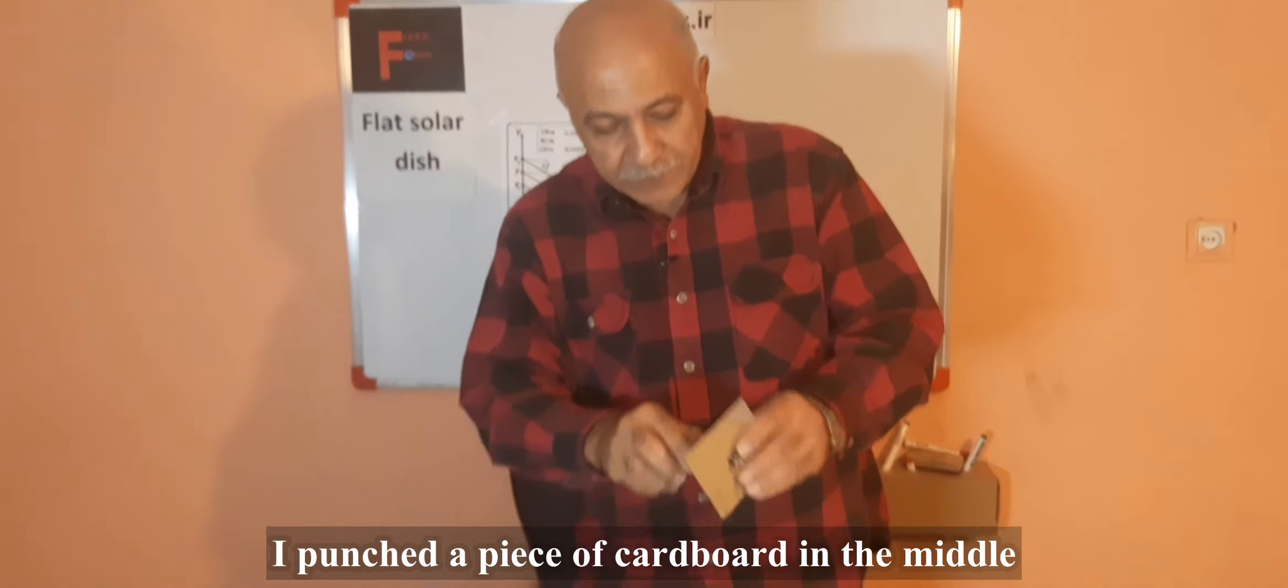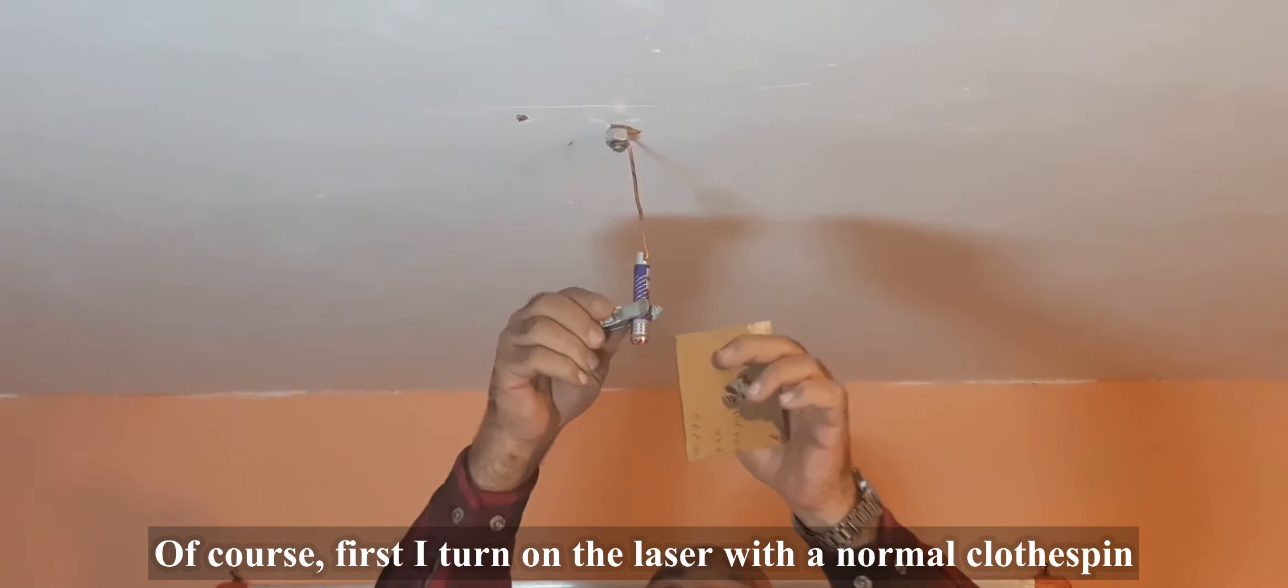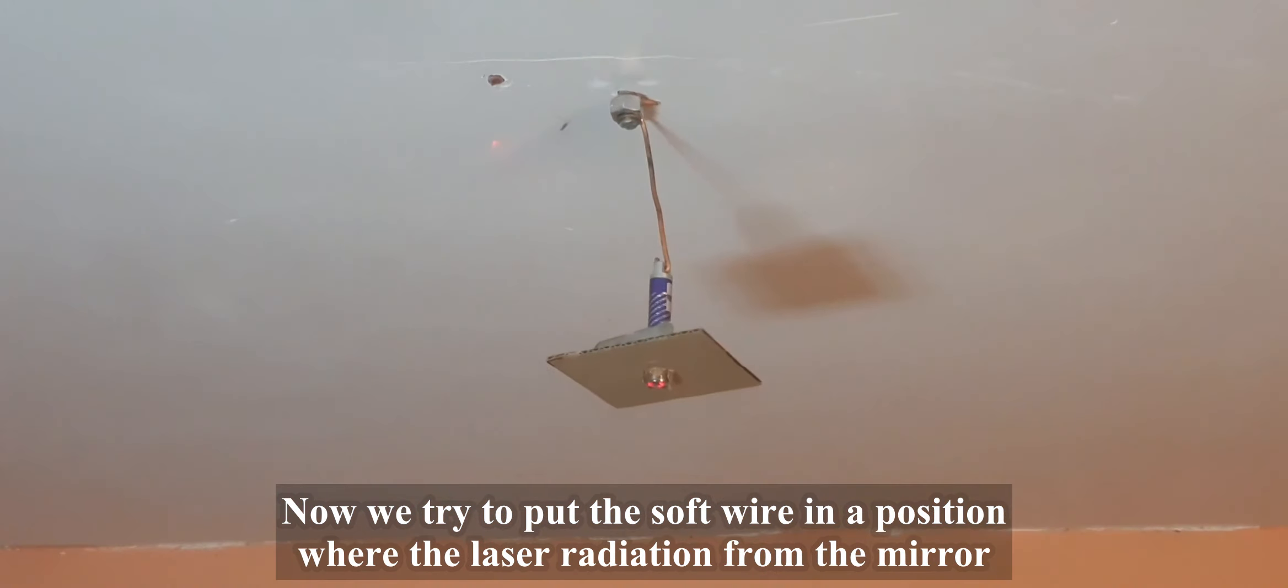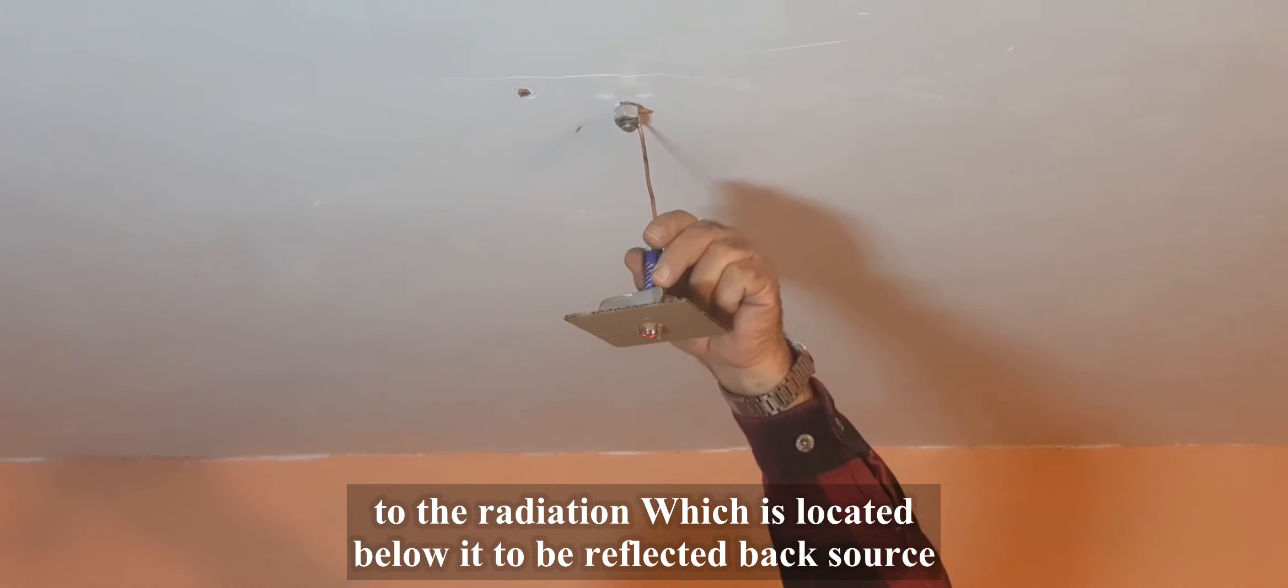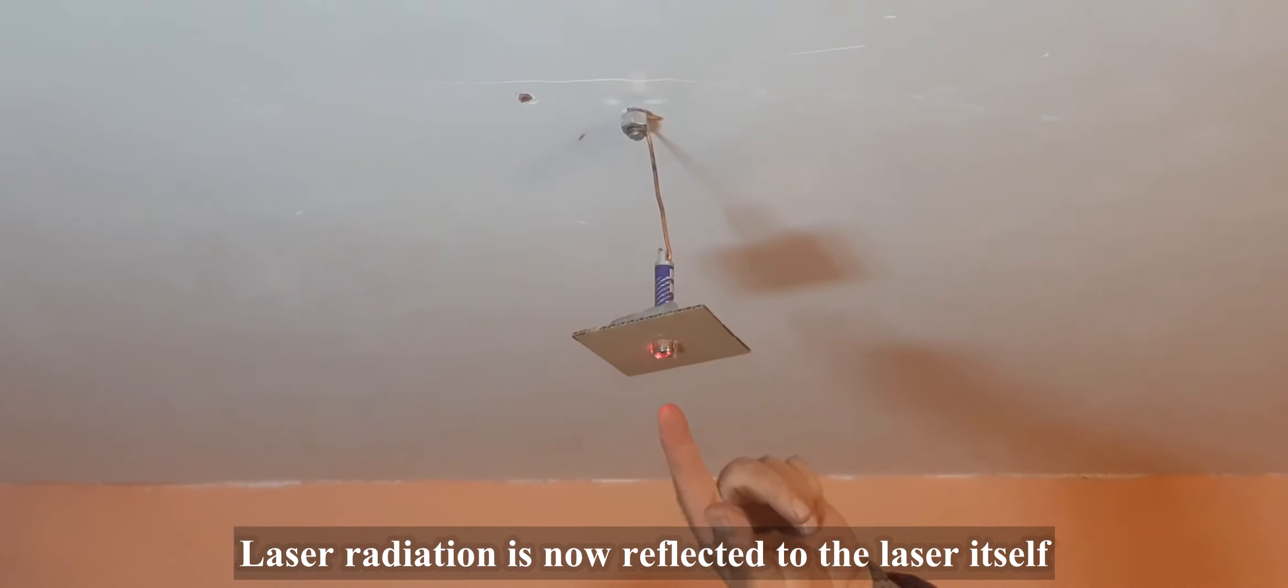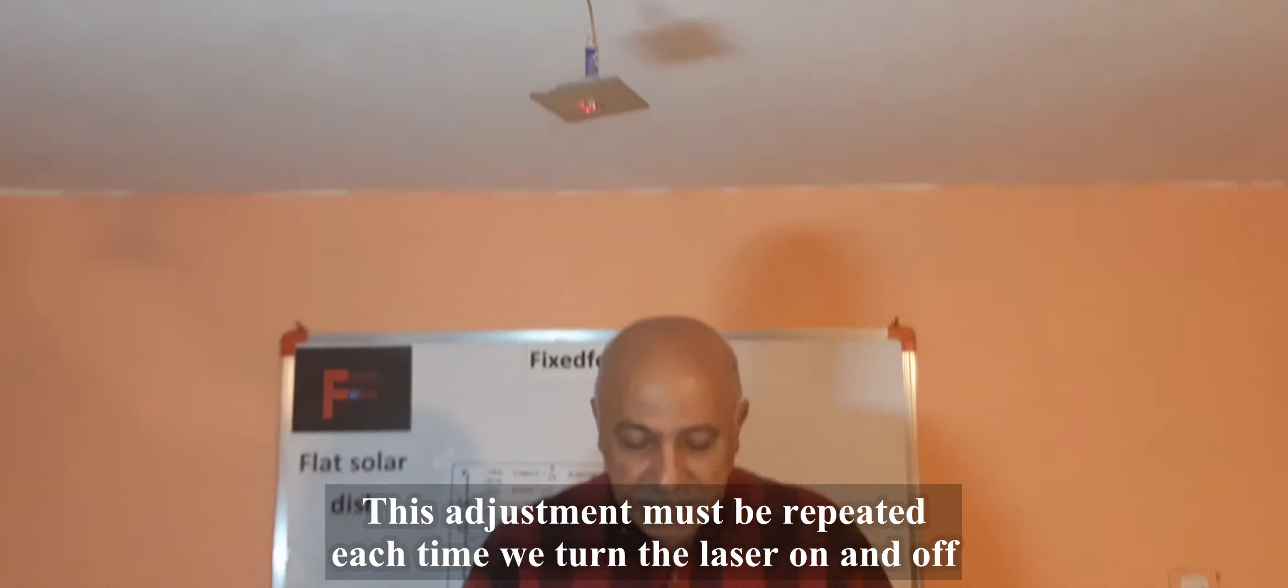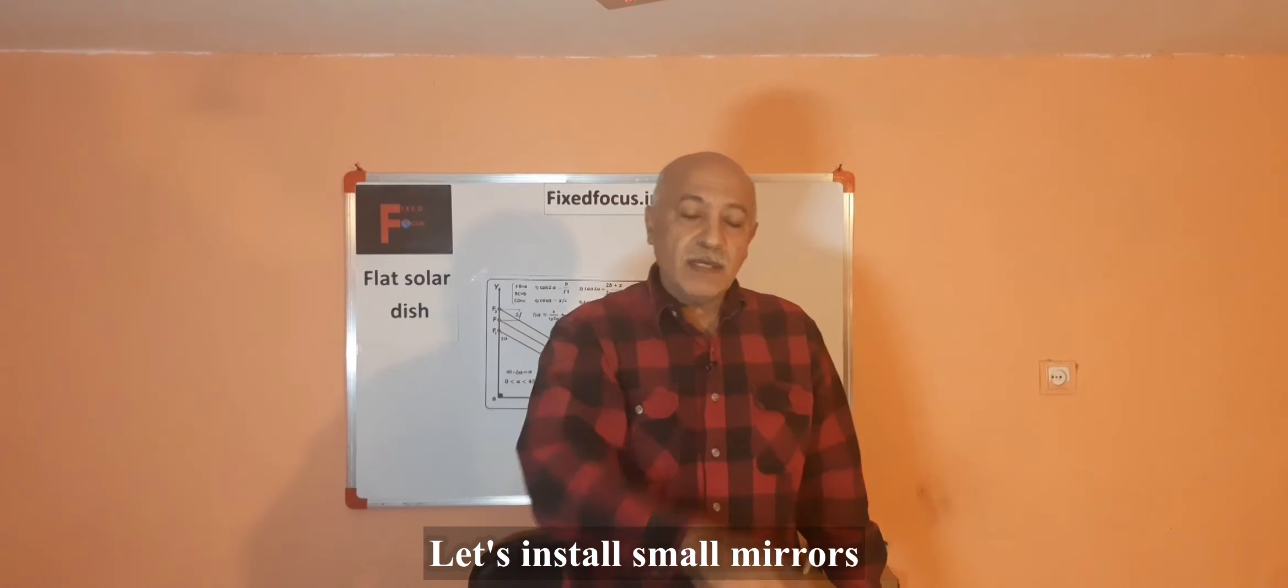I punched a piece of cardboard in the middle. I turned on the laser with a normal clothespin. There's the cardboard to make it easier to adjust the laser point. Now we try to put the wire on the position where the laser radiation from the mirror to the radiation below it will be reflected back to the source. Laser radiation is now reflected to the laser itself. The laser is perpendicular to our worksheet. This adjustment must be repeated each time we turn the laser on and off, and the verticality of the laser is of particular importance.